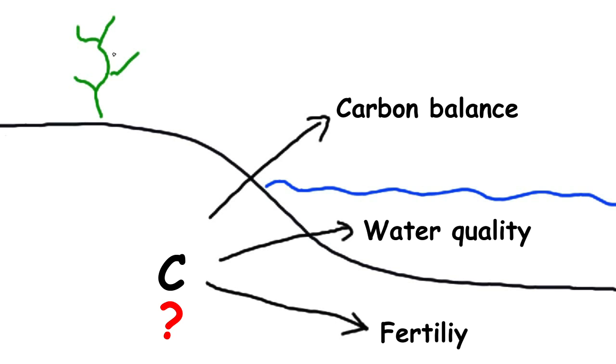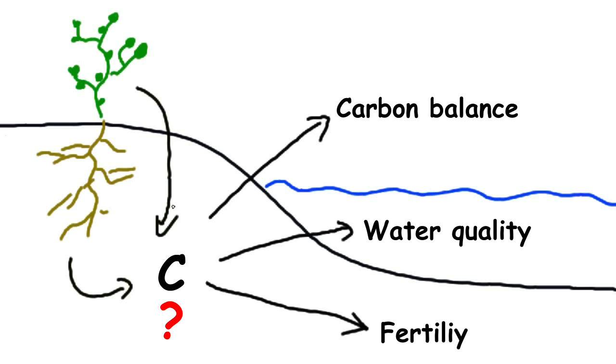Soil carbon is ultimately derived from plant input like leaf litter or root exudates. Traditionally, it is assumed that after initial decomposition of such input, small compounds are reacting with each other, forming complex and long-living humic substances in the soil.